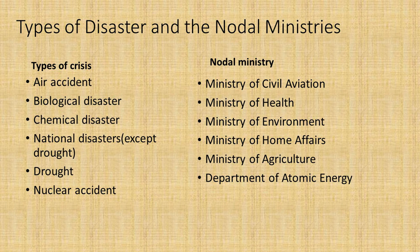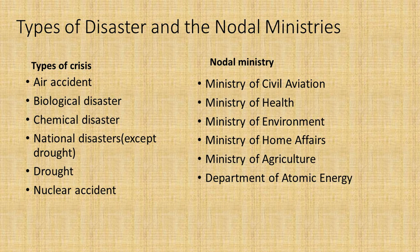Chemical disasters, for example the Bhopal gas tragedy or the recent Visakhapatnam gas leak, are dealt by the Ministry of Environment. Some other natural disasters like cold waves, hailstorm, forest fire, heat waves, and drought are dealt by the Ministry of Home Affairs, and drought is also dealt by the Ministry of Agriculture. Nuclear accidents — two notorious examples in India being Kalpakkam and Tarapur — are dealt by the Department of Atomic Energy.